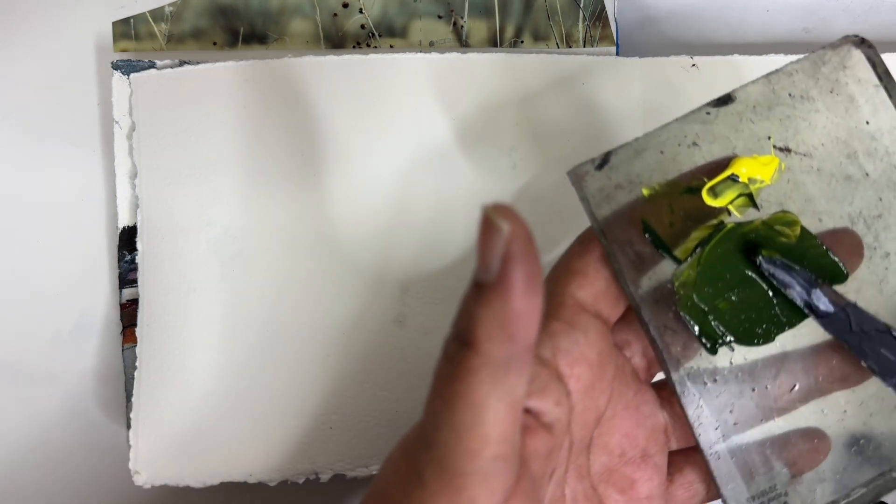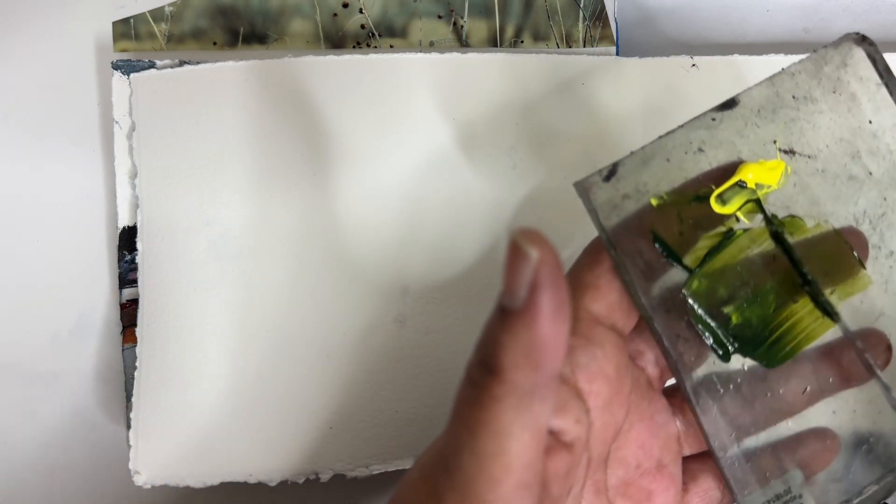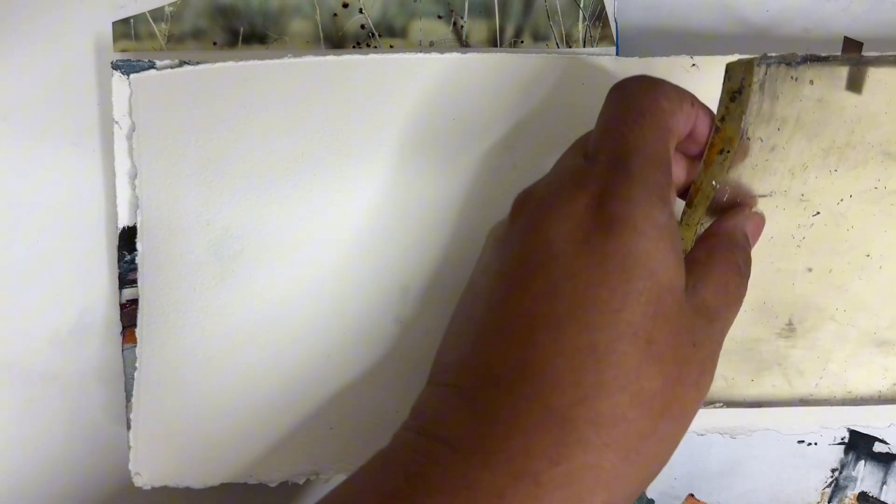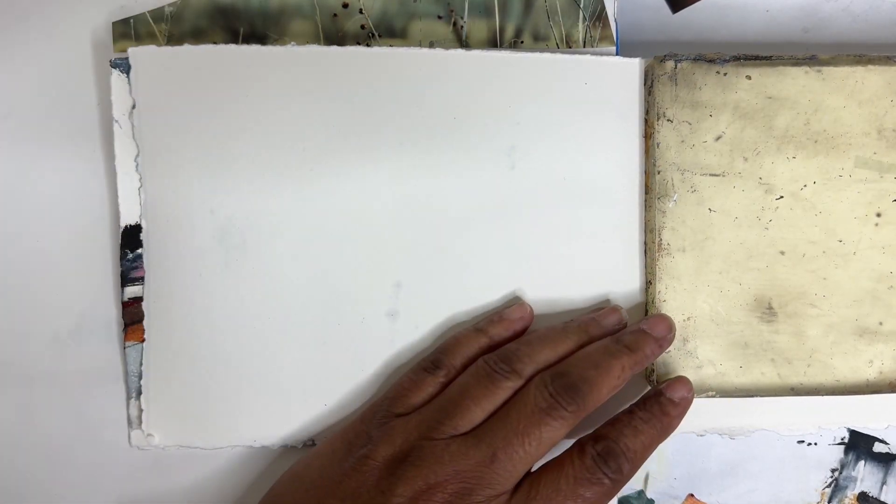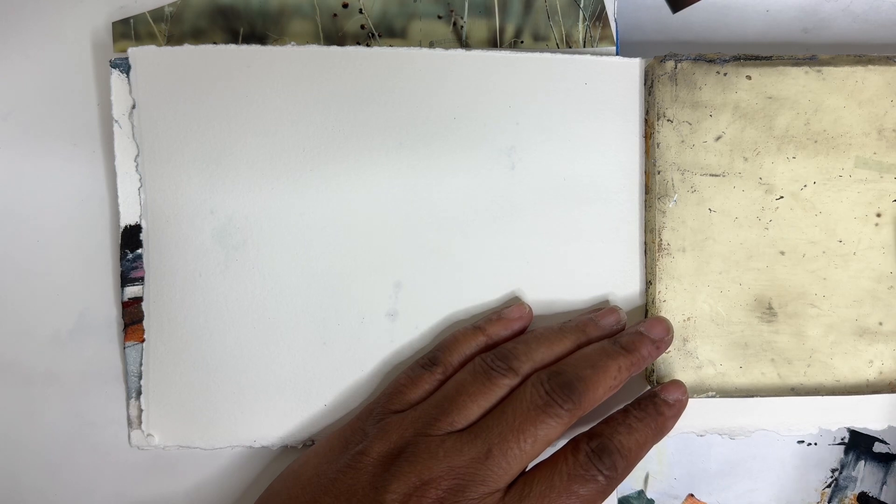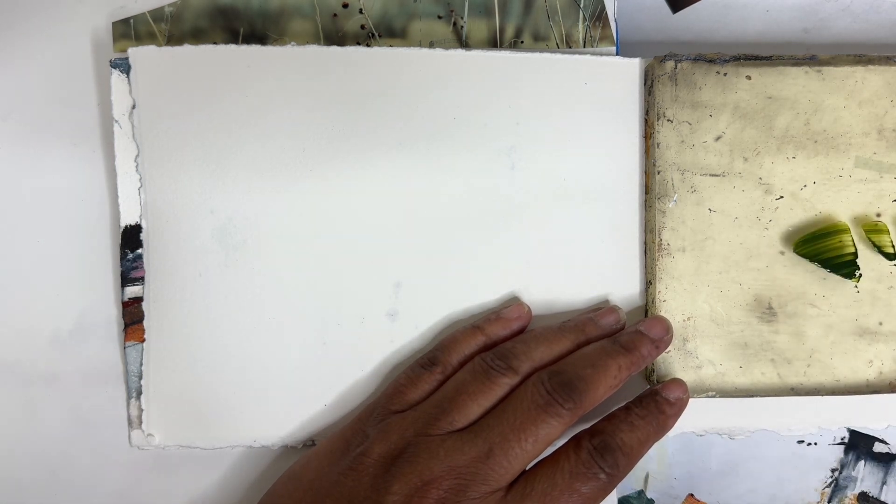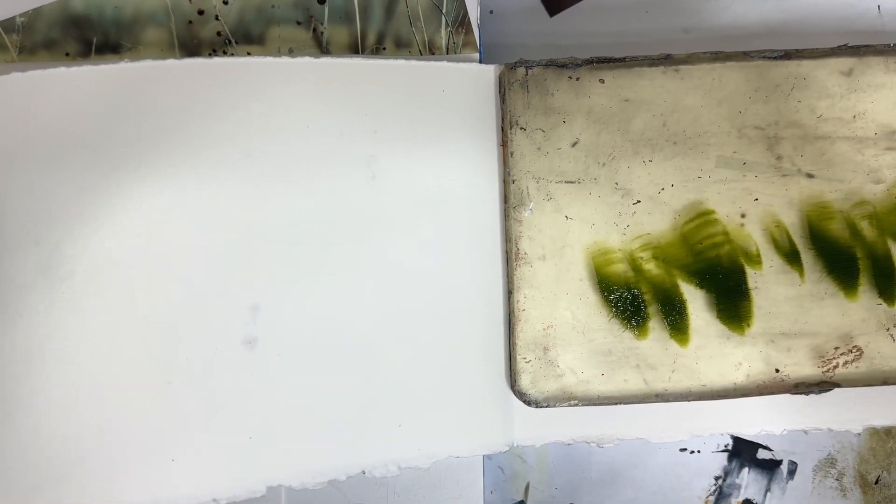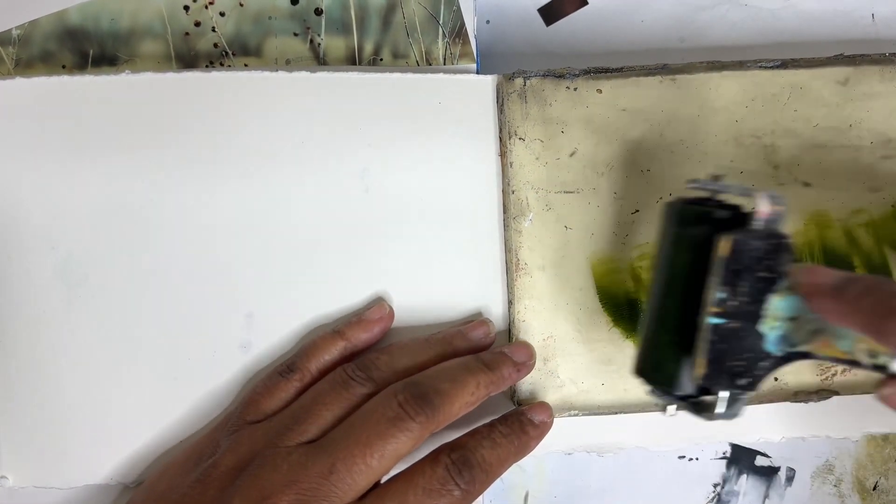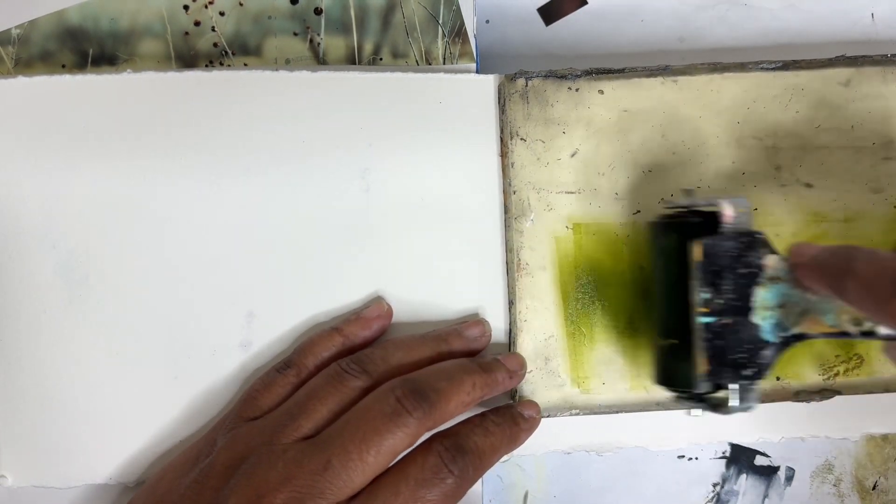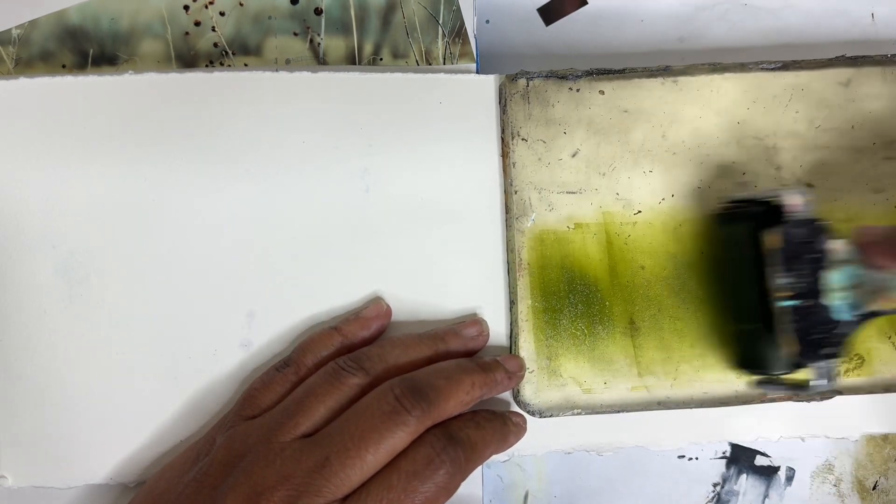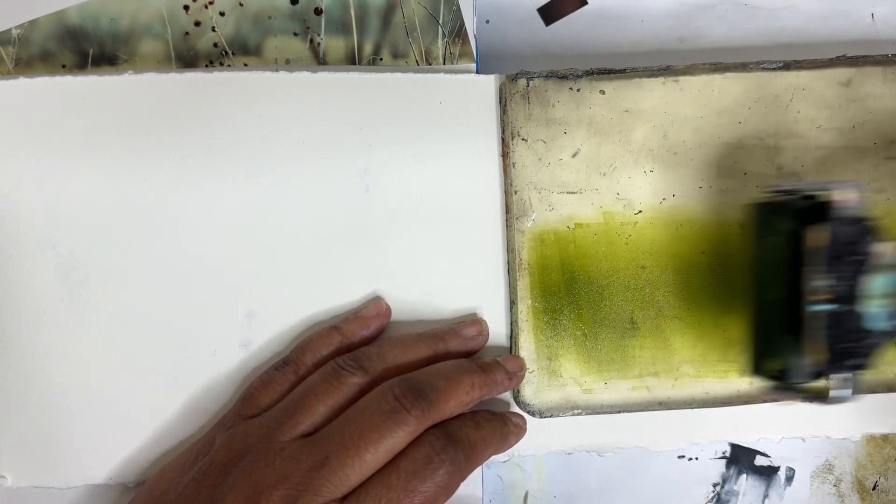I've mixed up some of this green yellow and I'm gonna put this on the jelly plate. I want to see if I can print over with the image transfer after we've laid down some jelly.